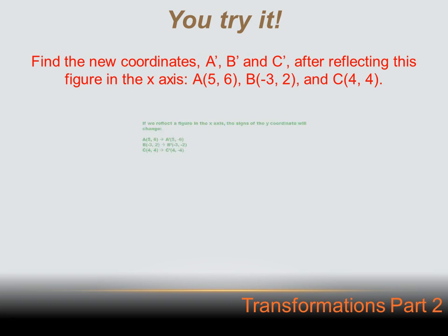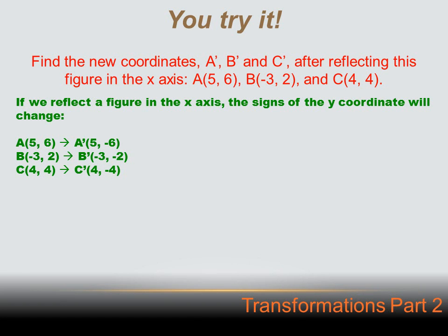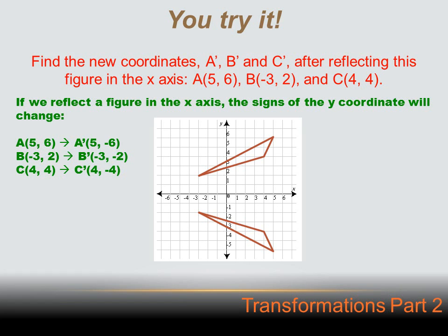Did you get it? I hope so. If we reflect a figure in the x-axis, the sign of the y-coordinates will change. If they were positive, they'll become negative. And we are reflecting this in the x-axis. So the signs of the y-coordinates are going to reverse. For instance, our first point was 5, 6. And when we reflect it, the 5 doesn't change, but the 6 becomes negative 6. And the same is true of the B point. Minus 3 stays at minus 3, but when we reflect it, 2 becomes minus 2. And 4, 4 becomes 4 minus 4. And when we diagram this, it looks like a reflection.